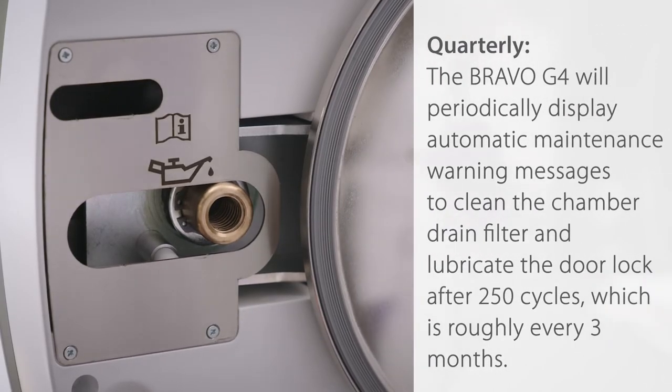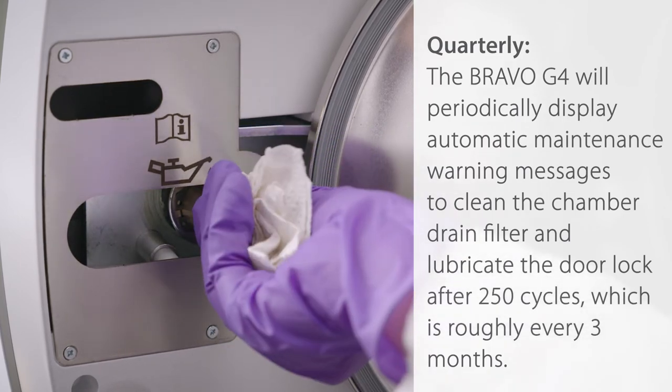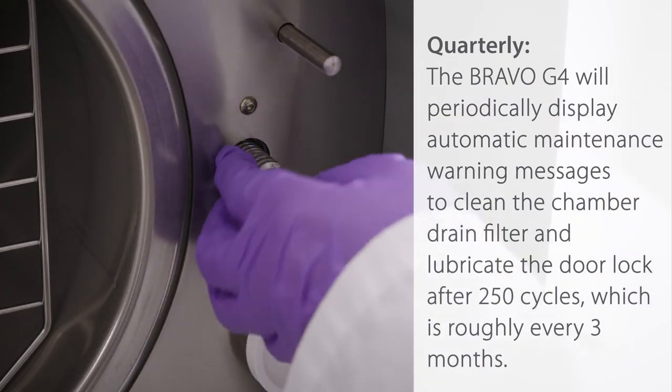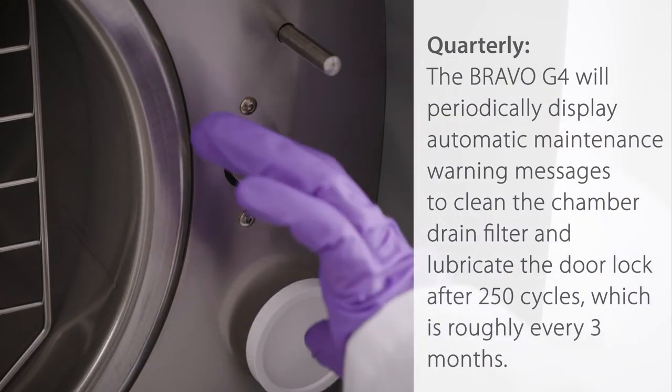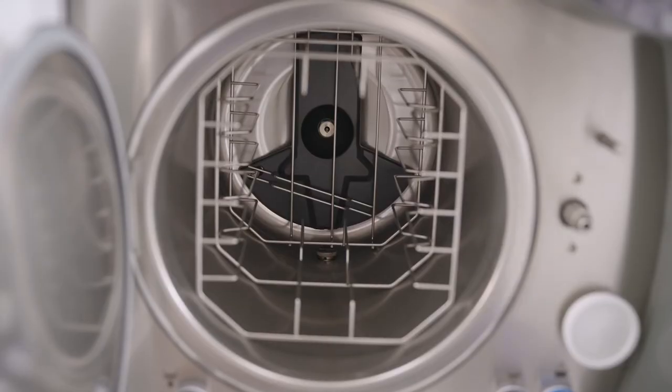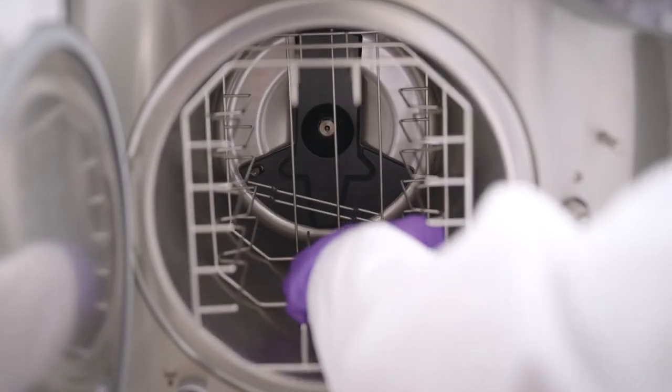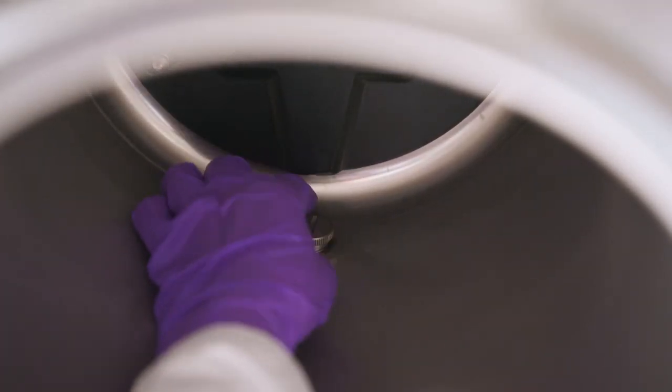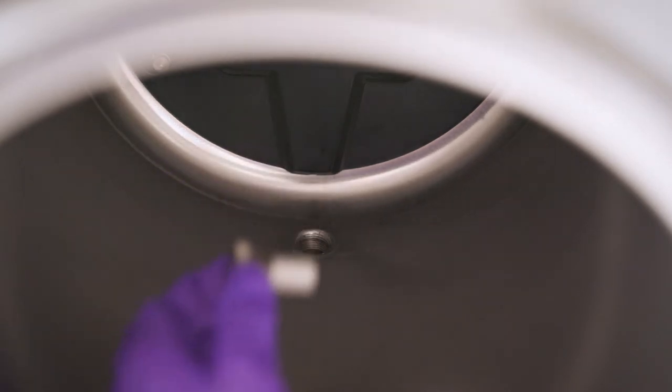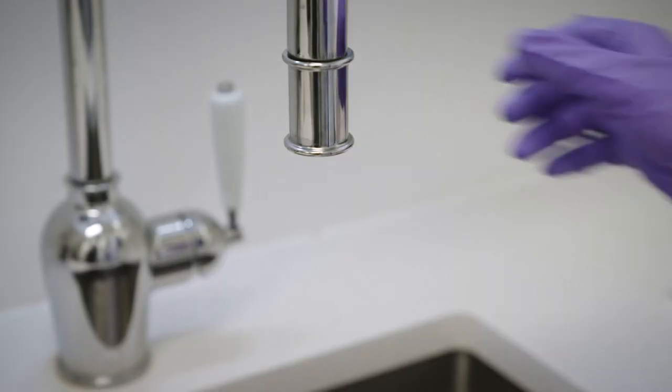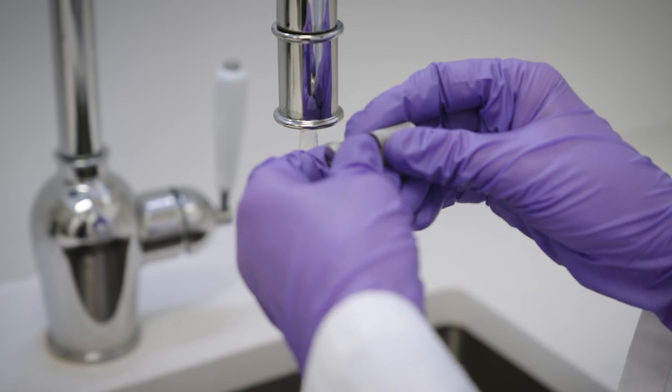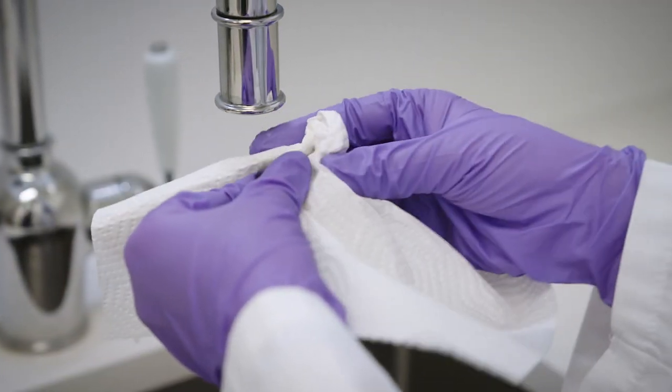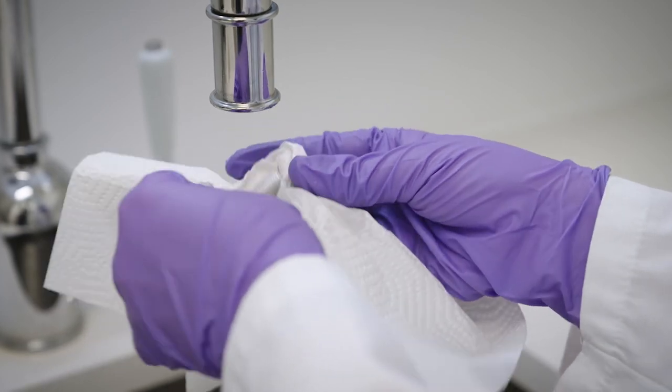Quarterly. The Bravo G4 will periodically display automatic maintenance warning messages to clean the chamber drain filter and lubricate the door lock after 250 cycles, which is roughly every three months. To clean the drain filter, open the sterilizer door and remove the cap using a coin or flat-bladed tool. Loosen the union that contains the filter. Remove the filter from its support and thoroughly clean it under a jet of running water and, if necessary, use a sharp tool to remove any large foreign bodies. If available, use a jet of compressed air to remove debris from the filter.